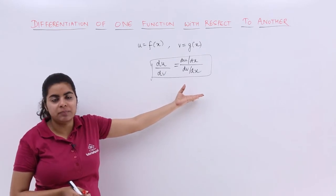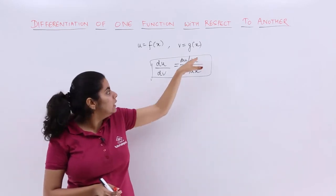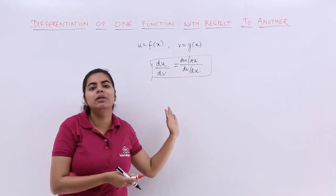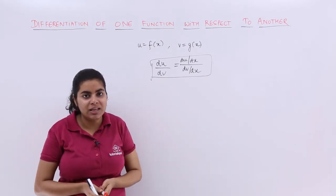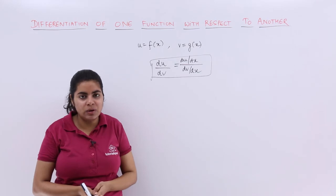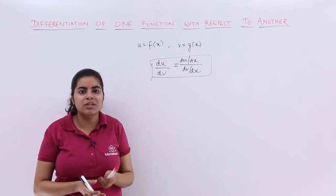Now let me explain why this makes sense. In short, dx and dx would cancel and you would get du by dv only. So for more insights, let's watch the next video with a question for this topic.